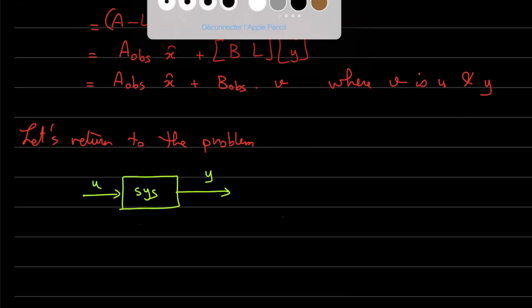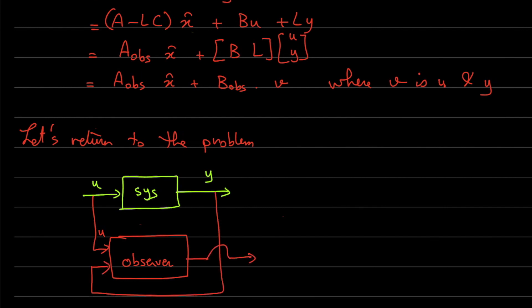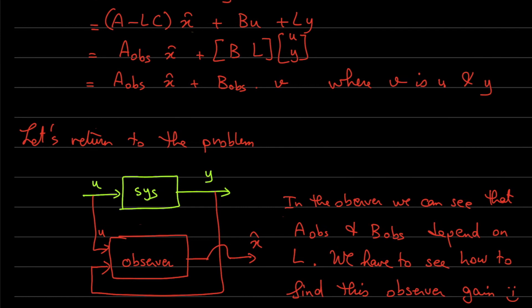We have a system with input U and output Y, and we use the observer to estimate its internal state. The inputs to the observer are U and Y, and the output is the estimated state X-hat. Inside the observer, we have the state matrix and input matrix depending on L, and we need to find this observer gain L.